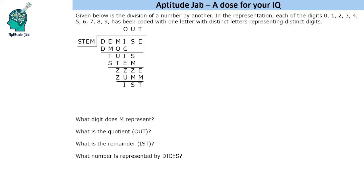Hello everyone, welcome to Aptitude Jab. This is a set based on cryptarithmetic. We are given a division problem and we have to find out what digits these different letters represent. DEMISE is being divided by STEM, we get the quotient as OUT and the remainder as IST. These will be subtractions from the digits, so we will have to make a table.